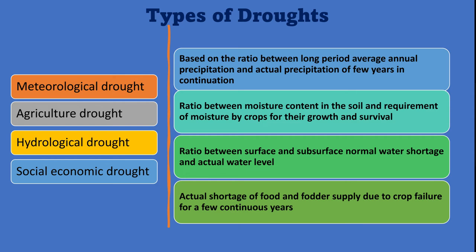Drought has been categorized into four types: meteorological drought, agricultural drought, hydrological drought, and socio-economic drought. These categories are based on the ratio between long-period average annual precipitation and actual precipitation over consecutive years; the ratio between soil moisture content and crop moisture requirements; the ratio between normal surface and subsurface water levels and actual water levels; and actual shortage of food supply due to crop failure over continuous years.